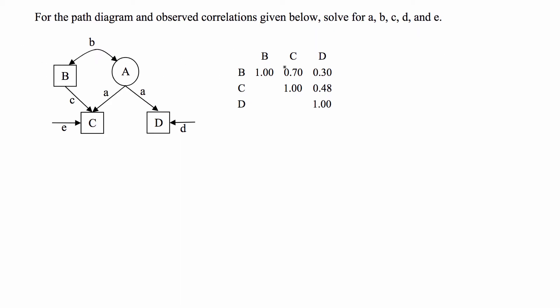We're given the correlation between two variables and we want to be able to find these direct correlation coefficients. Just using the correlation matrix that we're given and Wright's path analysis rules we'll be able to solve for A, B, and C, and then you solve for D and E using another equation. Let's go ahead and solve for A, B, and C first.